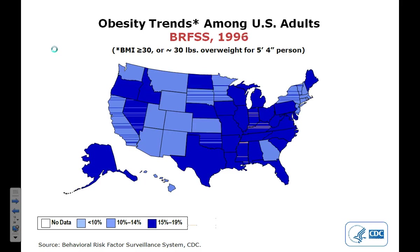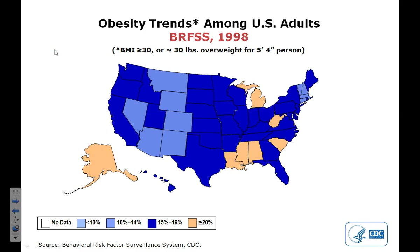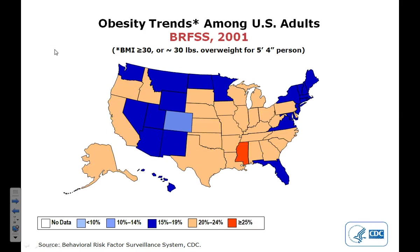That trend continues for many states until 1997, when Indiana, Kentucky, and again Mississippi lead the nation in the number of obese individuals per unit of population. By 2001, Mississippi is again leading the way — 25% of the Mississippi population is considered obese.